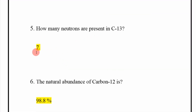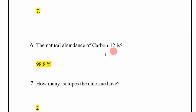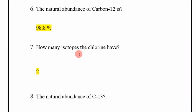Next: how many neutrons are present in Carbon-13? The answer is 7. Next: what is the natural abundance of Carbon-12? The answer is 98.8 percent.